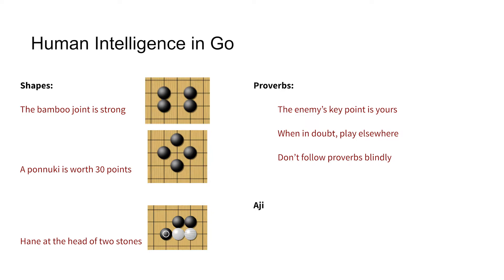Go has been difficult for a while because humans tend to think about Go in terms of shapes and proverbs. We see the shape called the bamboo joint, and the proverb goes that the bamboo joint is a strong shape. Similarly, the panooki shape is known as a very strong shape that's good if you can make it. Or we can have proverbs that relate to how you should move, like hane at the head of two stones.